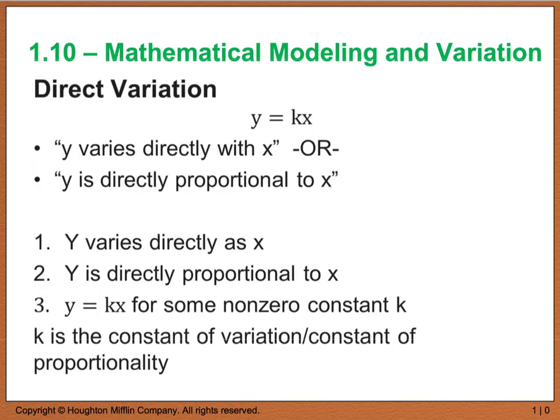Another form of modeling, or actually variation, that we're going to look at is called direct variation. Direct variation looks like y equals kx. You read that as y varies directly with x, or y is directly proportional to x. Y equals kx for some non-zero constant k, so k is the constant of proportionality, constant of variation. Those are kind of terms that are used interchangeably. So let's go ahead and look at an example to see how this works.